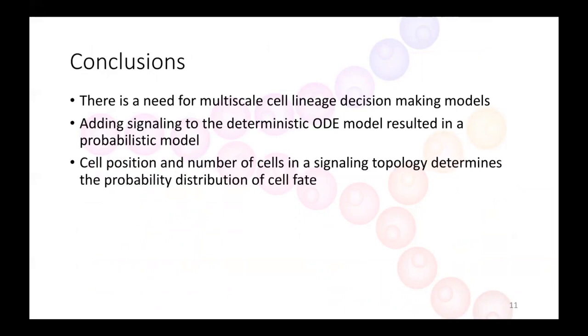And then lastly, cell position and the number of cells in the signaling topology determines the probability distribution of cell fate.